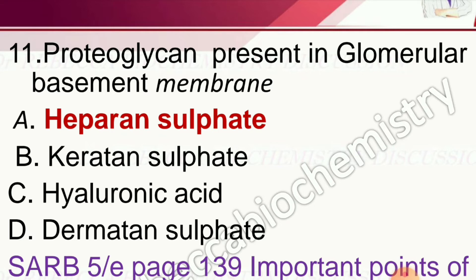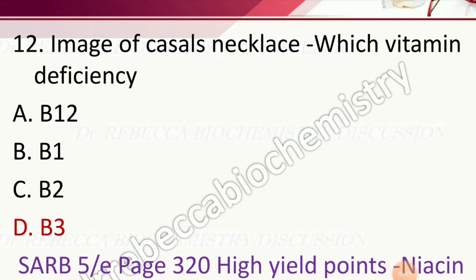Question 11: Which proteoglycan is present in the glomerular basement membrane? Options are heparan sulfate, keratan sulfate, hyaluronic acid, and dermatan sulfate. The correct answer is heparan sulfate.